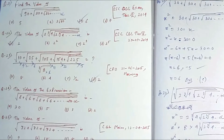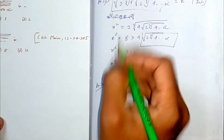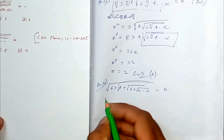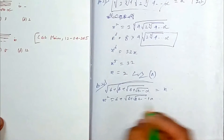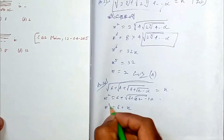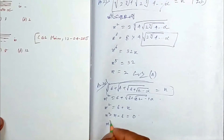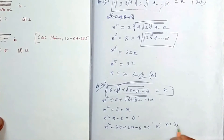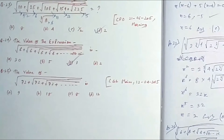Let's check the solution. Let the whole expression equal x. Squaring both sides: x² = 6 + √(6+√(6+...)) = 6 + x. So x² - x - 6 = 0. By middle term factorization: x² - 3x + 2x - 6 = 0, giving x(x-3) + 2(x-3) = 0, so x = 3 or x = -2. We neglect -2, so x = 3. The answer is option C.